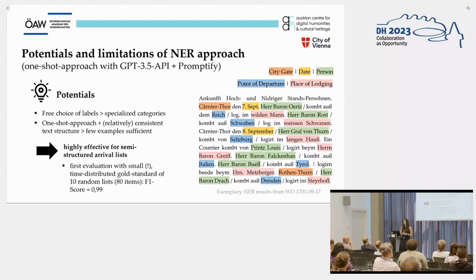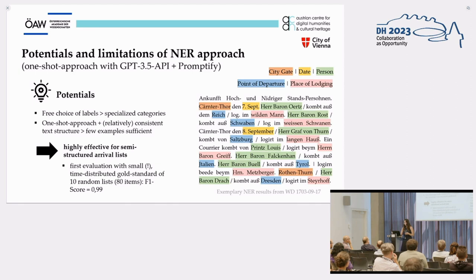What are the potentials of using this approach? One helpful aspect was clearly the choice of labels — the free choice of labels in comparison to fixed categories of pre-trained models allows for highly specialized categories that mirror the structure of our textual material. Also, since the arrival lists show a relatively consistent structure over time, the one-shot approach using very few examples offers a practical and efficient solution. These two seem to be the crucial reasons why this approach worked best for us.